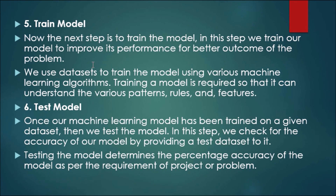Step five is to train the model. In this step, we train our model to improve its performance for a better outcome. We use the dataset to train the model using various machine learning algorithms. Training the model is required so that it can understand various patterns, rules, and features. This is one of the most important steps of the machine learning life cycle.